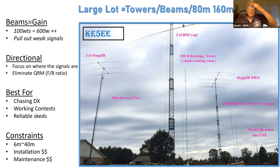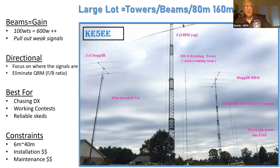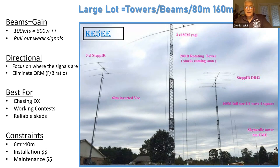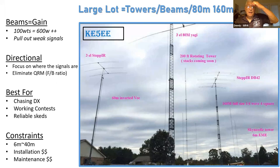Beams are also directional, so you can focus on where the signals are. For example, if you're trying to work a station down in Antarctica, you're going to point it south and hopefully they'll hear you. Being directional, it also has what they call the front-to-back ratio, which means you're going to null out anything on the back or side of the beam. That helps out especially if you're in a contest and trying to focus on one part of the globe. Beams are best for chasing DX, working contests, and also if you have a reliable schedule. Some of the constraints of beams are that they're mostly relegated to six meters to about 40 meters, and a 40-meter beam is pretty large.